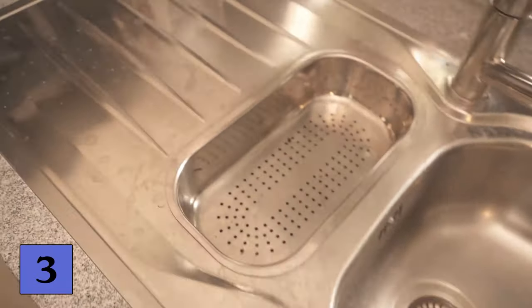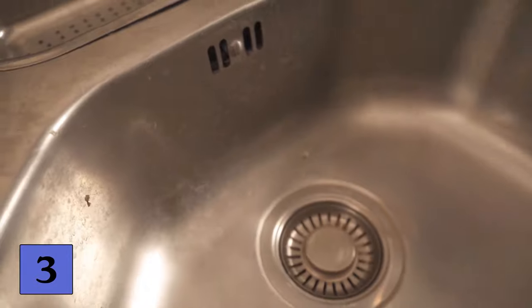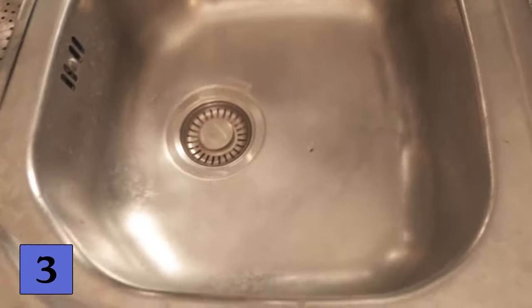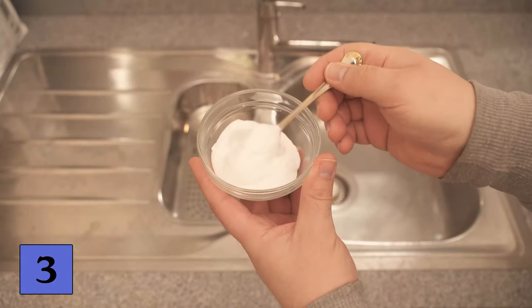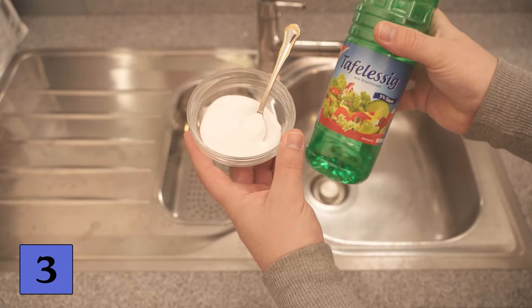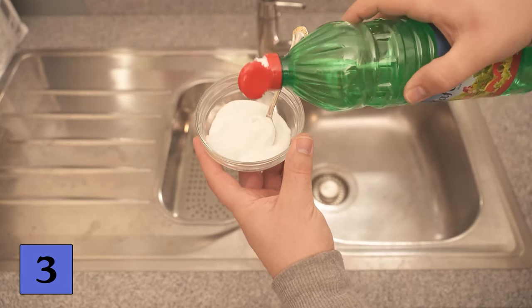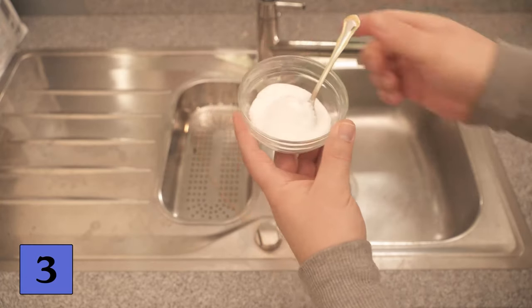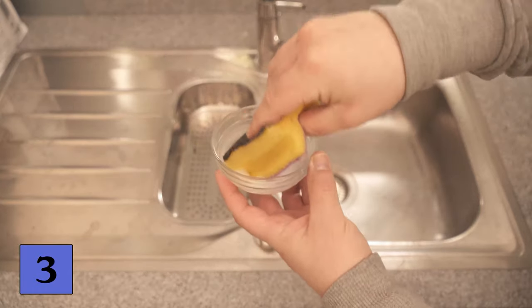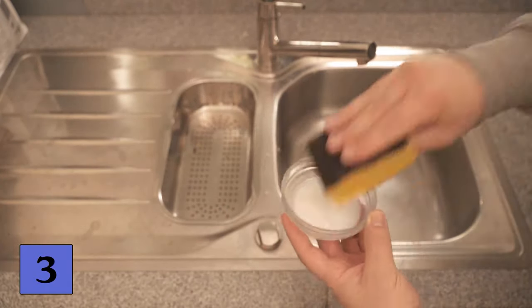Let's move on to trick number three, which not many people know. You can also use baby oil in your stainless steel sink, and that really has an advantage, especially visually. But first you should make sure that the sink is completely clean. You can use baking soda and vinegar for this. I put a small amount of baking soda in a bowl and add a little vinegar. It shouldn't be so much that the mixture is liquid at the end. It should be a nice paste as you can see here with me now.